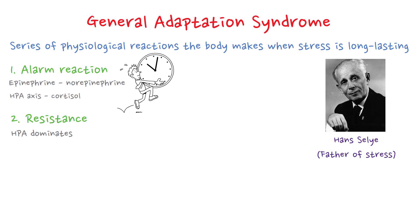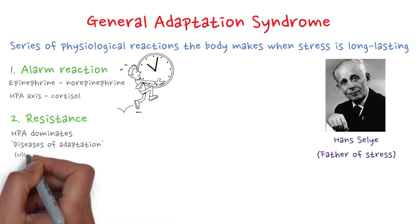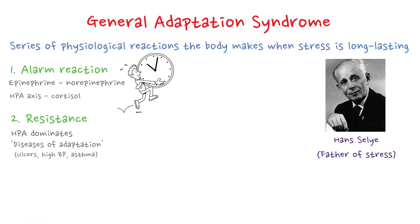Physiological arousal remains higher than normal and the body replenishes the hormones the adrenal glands have released. Despite this continuous physiological arousal, the individual may show few outward signs of stress, but the ability to resist new stresses may become impaired. According to Selye, this impairment may eventually make the individual vulnerable to health problems — he called it the diseases of adaptation — including ulcers, high blood pressure, asthma, etc.